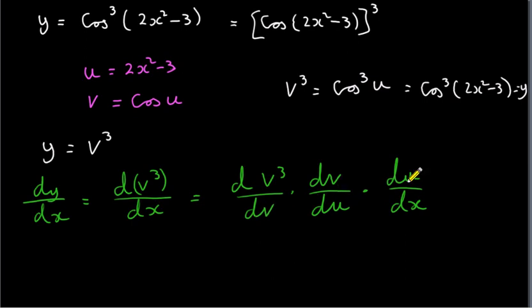Now you can see that this will actually collapse down to the derivative of v cubed with respect to x, which is what we want. That's dy dx, because these dv's will cancel and the du's will cancel. These three quantities actually behave like fractions. We can cancel numerators with denominators.